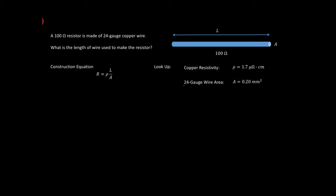And you find that the area of 24-gauge copper wire is one-twentieth, or one-fifth, 0.2 of a square millimeter. Okay, so it's a very small sort of thing.